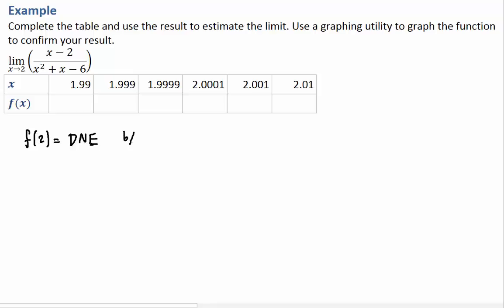Unless you're Chuck Norris, you cannot divide by 0. So f at 2 does not exist, and this is because the denominator is 0. 2 squared plus 2 minus 6 equals 0, so we have a problem.